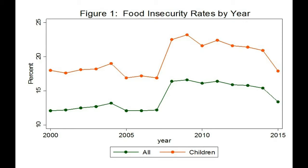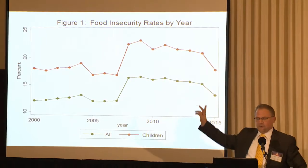Food insecurity was really a leading indicator — rates went up before other indicators of well-being went up. The third thing to point out is that food insecurity rates remained high from 2008 through 2014. The recession ended in roughly 2009, but the rates remained high. Despite the fact that the economy was presumably doing better, the negative effects of food insecurity lingered for five more years. It wasn't until 2015 that rates finally fell, though they're still higher than they were in 2007.